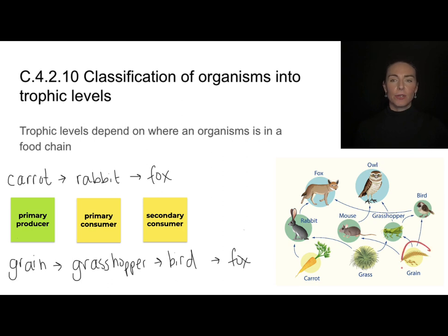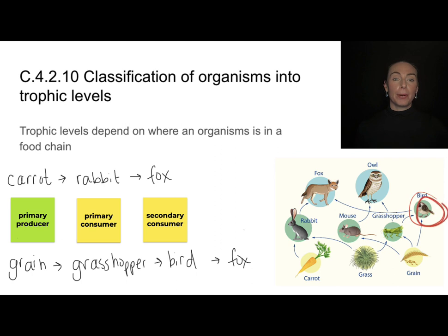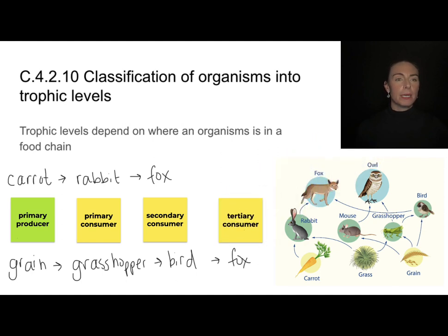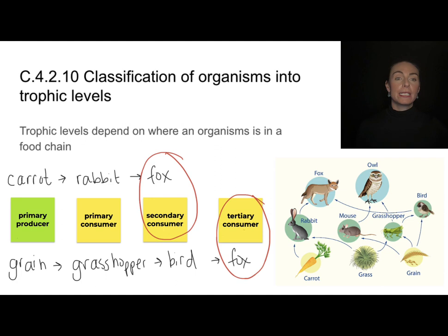In this case, the grain is eaten by the grasshopper, which is eaten by the bird, so the bird is the secondary consumer. The fox eats the bird and is therefore a tertiary consumer. So a fox can be both a secondary consumer and a tertiary consumer, depending on what it is eating.